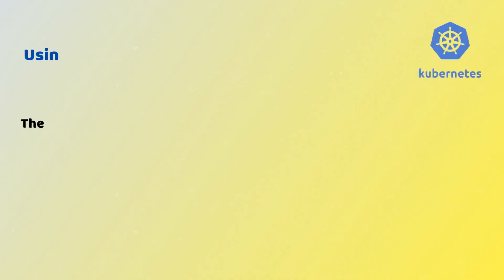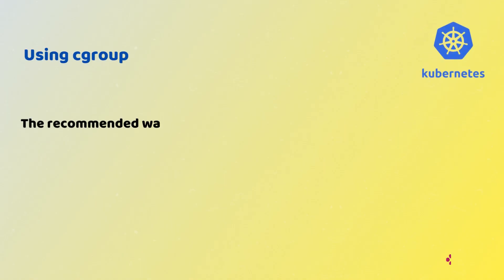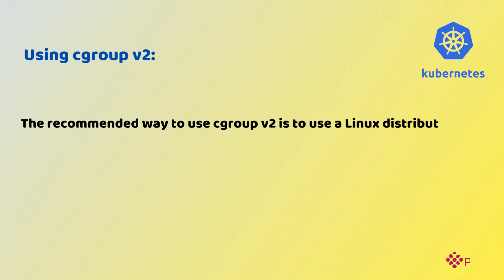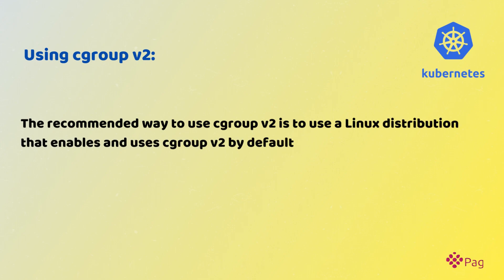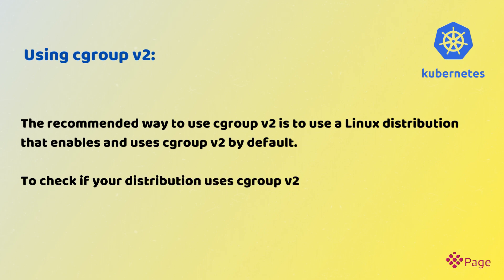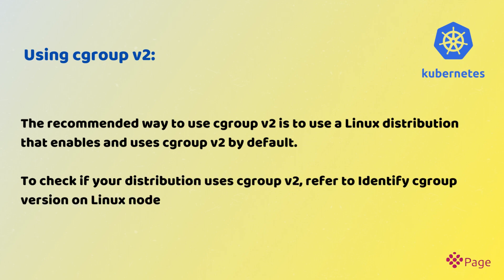The recommended way to use CGroup V2 is to use a Linux distribution that enables and uses CGroup V2 by default. To check if your distribution uses CGroup V2, refer to the 'Identify CGroup Version on Linux Nodes' documentation.